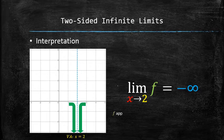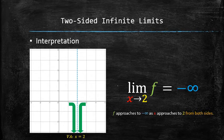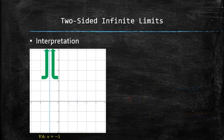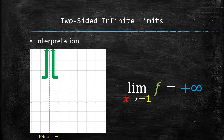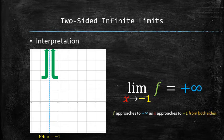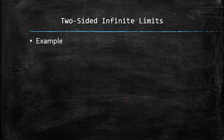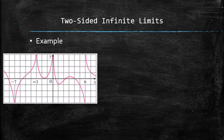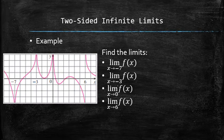It shows that f approaches to negative infinity as x approaches to 2 from both sides. Let's do an example. Consider a function defined by the following graph and let's find the following limits. In other words, let's describe the behavior of the graph around its vertical asymptotes.